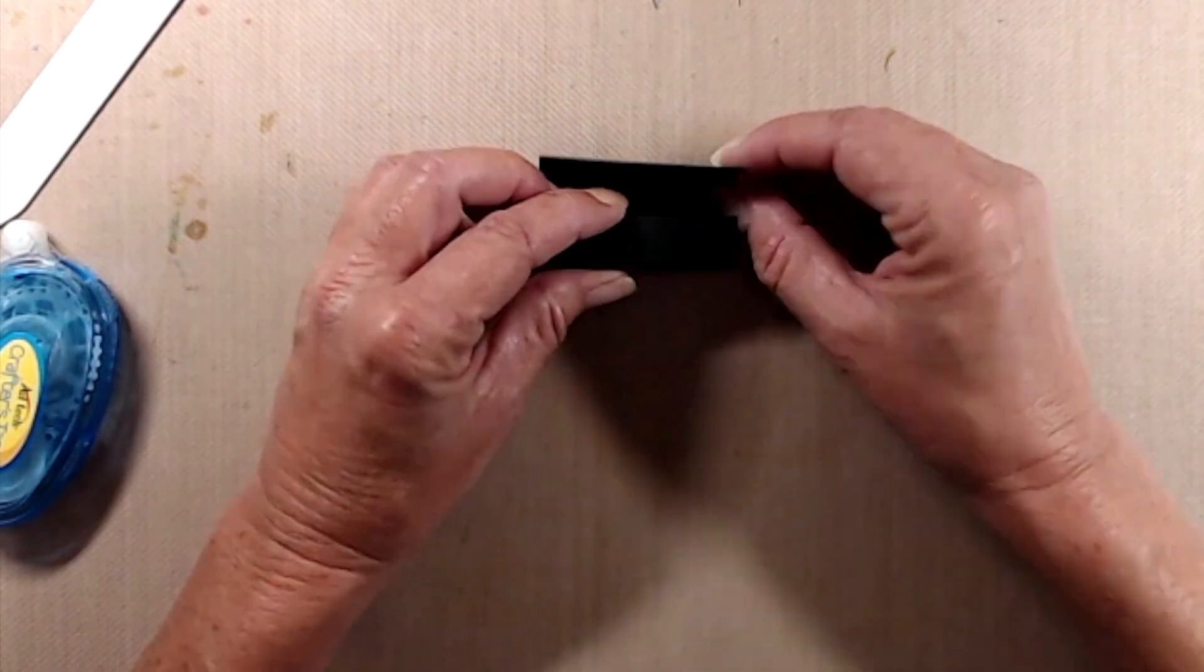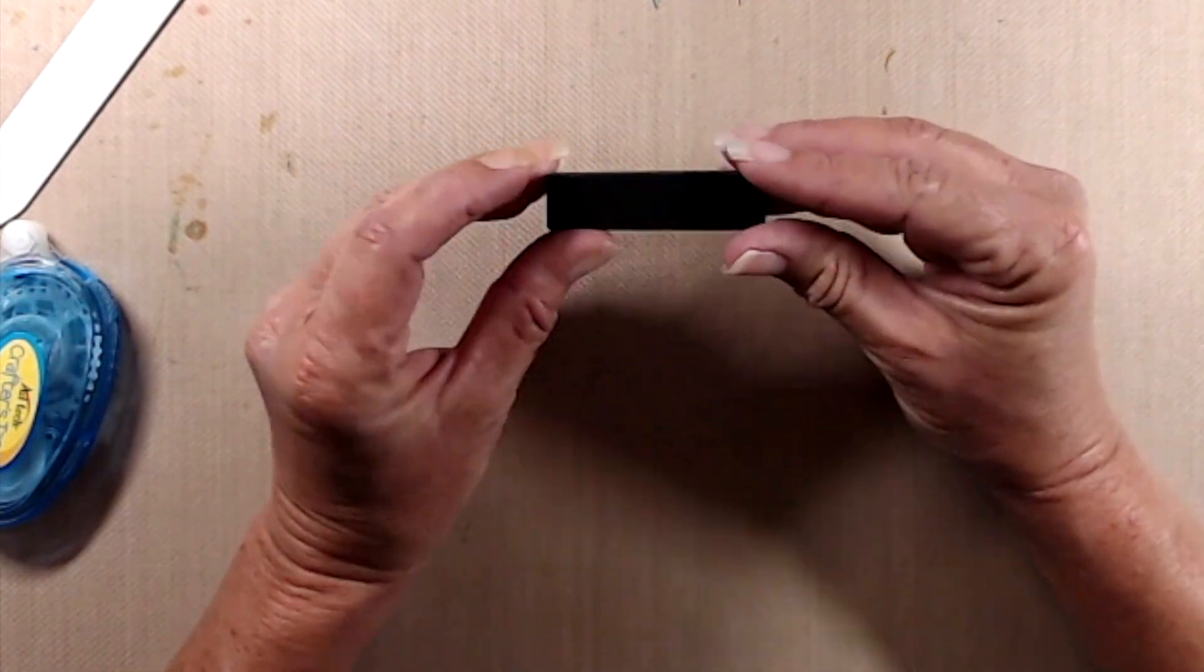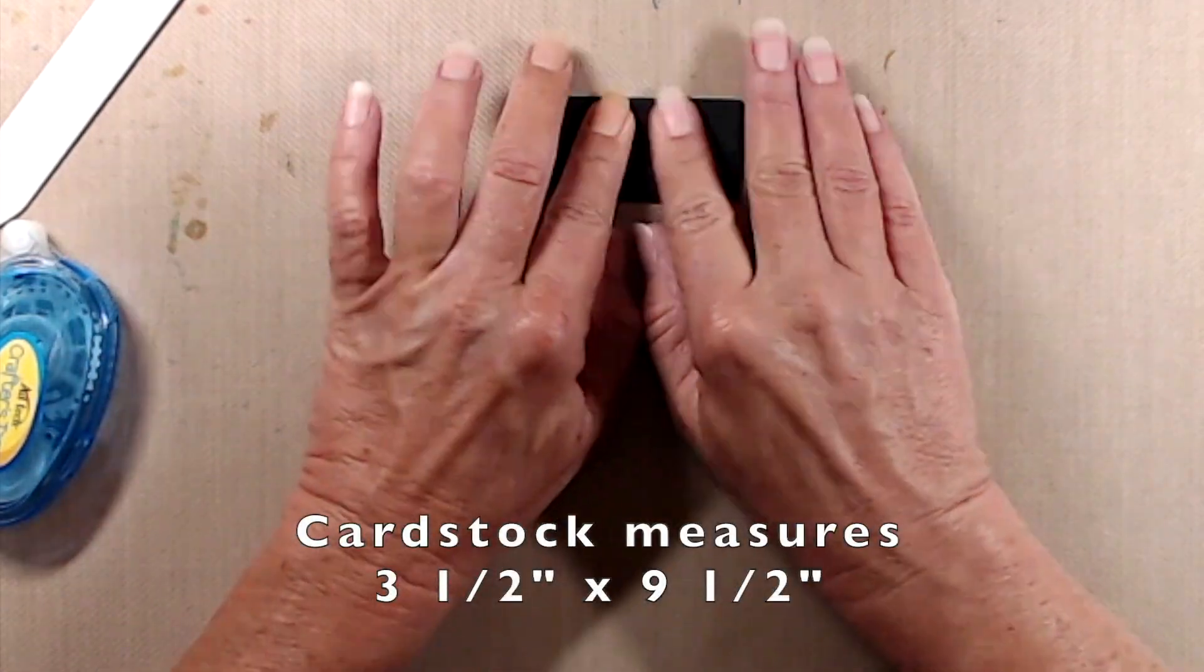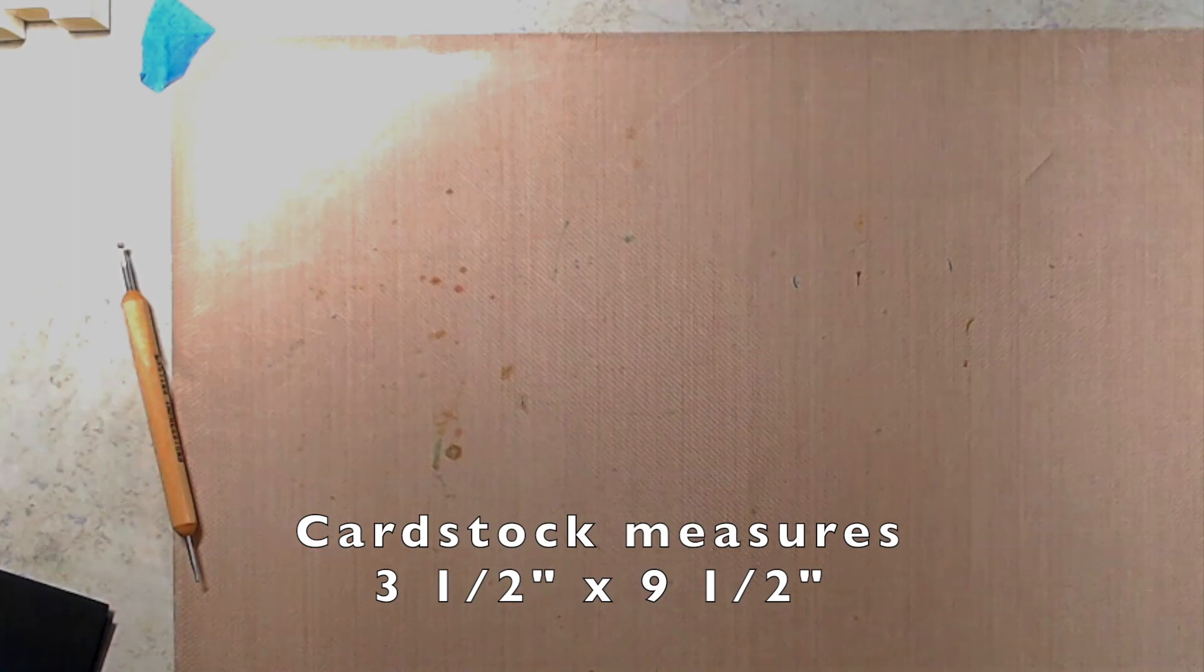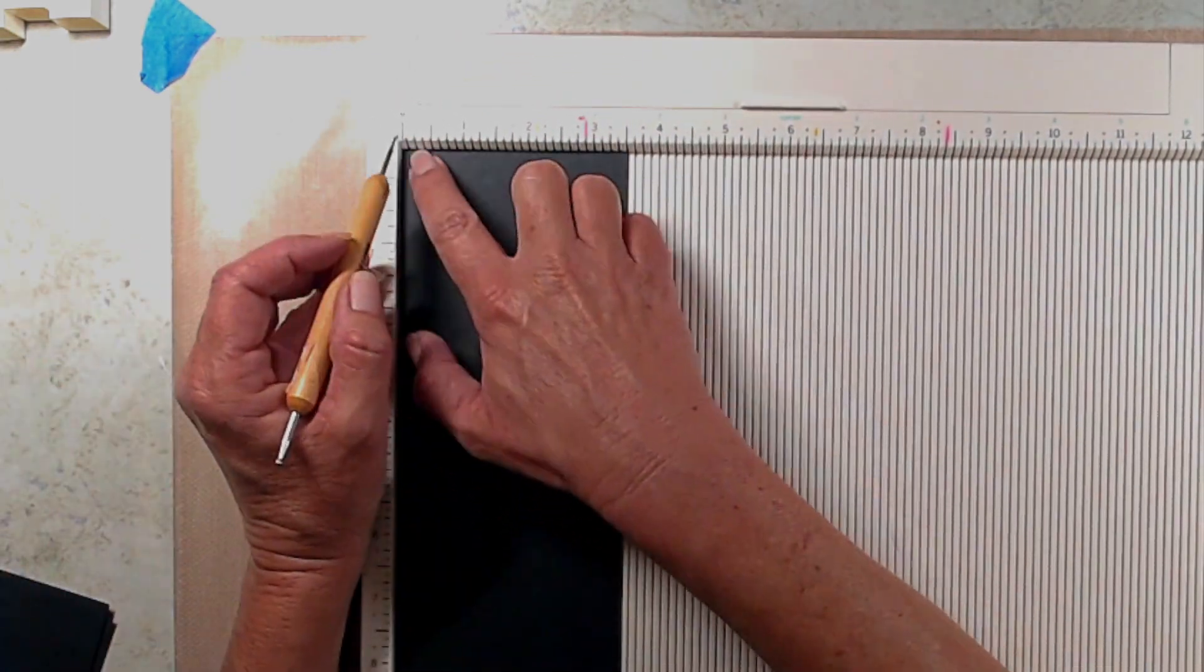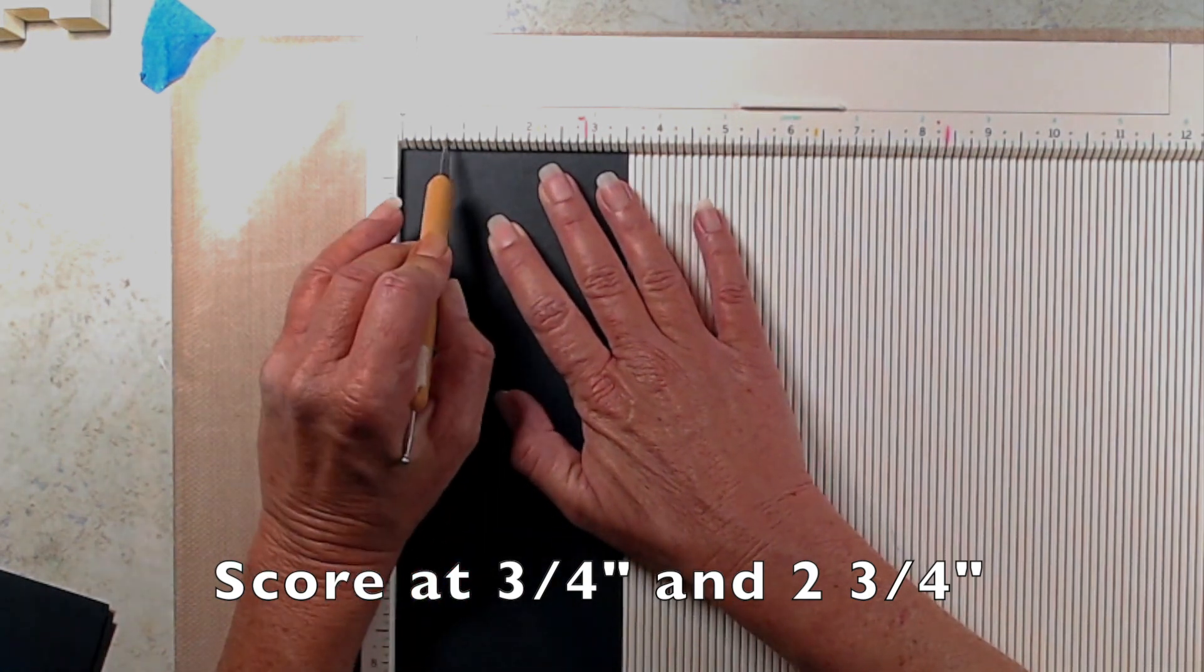Next, we're going to move on to creating the actual carrier for the little test tubes. For that, you'll need a piece of cardstock that measures three and a half by nine and a half. You'll score on the three and a half inch side at three quarters of an inch and two and three quarters of an inch.